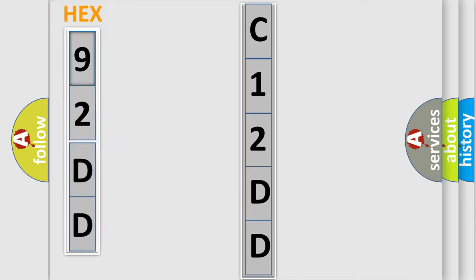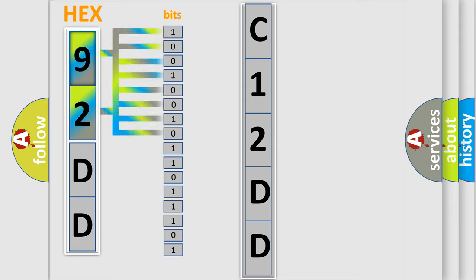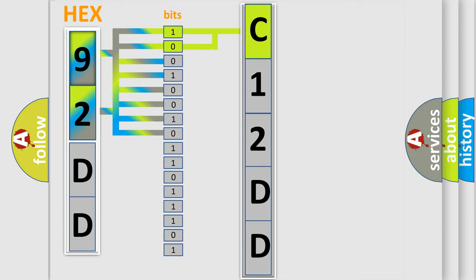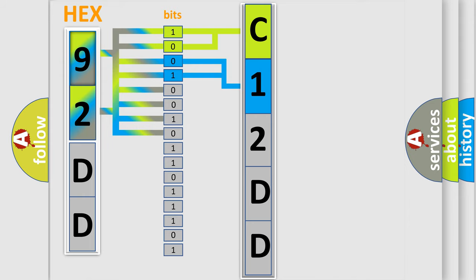The error code is split into two bytes consisting of 16 bits. One bit is the basic unit that each computer works with. The bit has two logical states: zero, the low level, and one, the high level. By combining the first two bits, the basic character of the error code is expressed. The next two bits determine the second character. The last four bits of the first byte define the third character of the code.